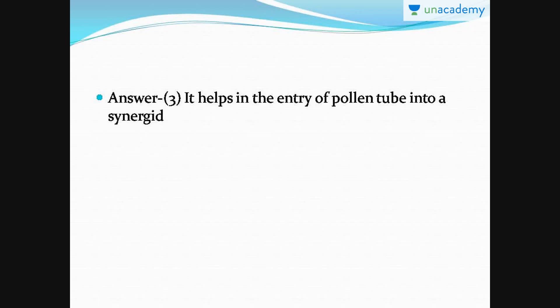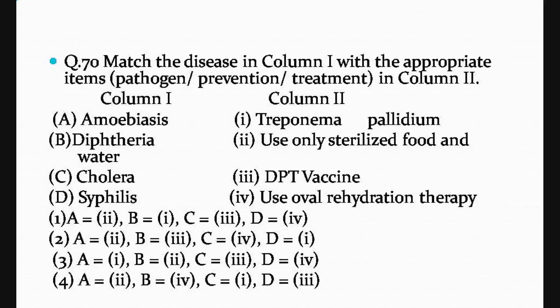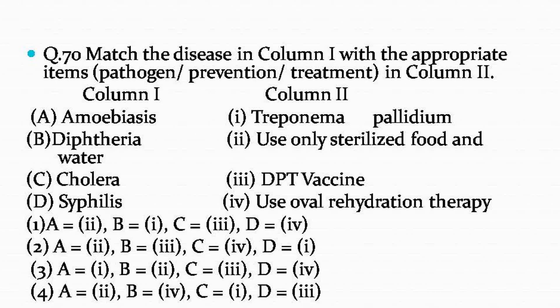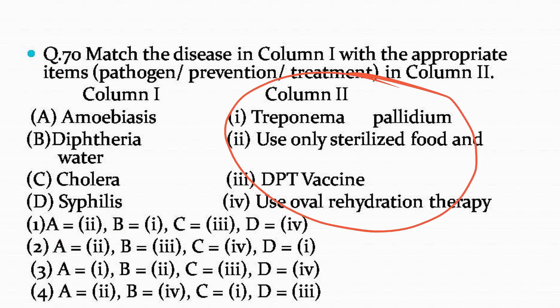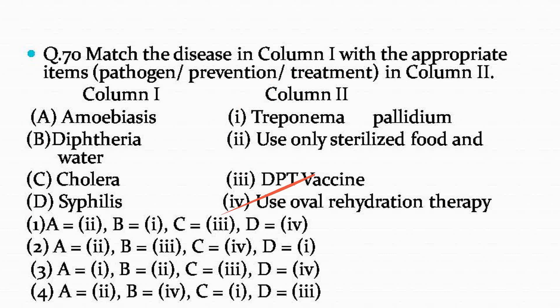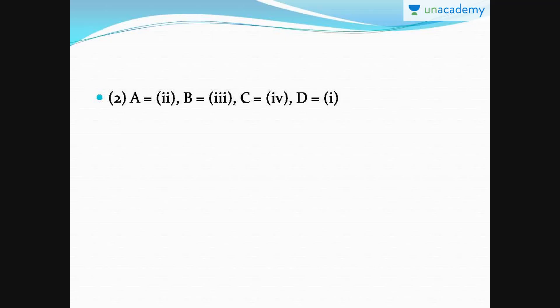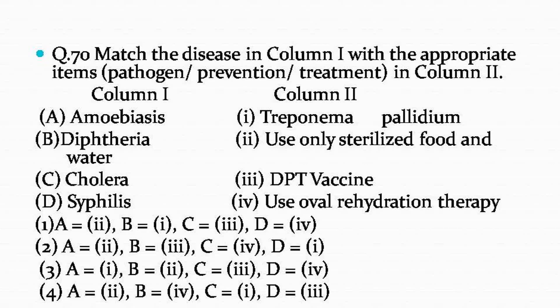Now we move to question number 70. In this question there are two columns — column one and column two. There are four diseases and you have to match them with the correct option in column two, which can be a pathogen, a prevention, or a treatment of the disease. The correct answer is option number two.